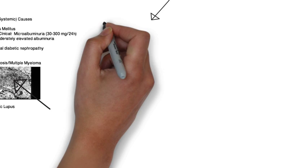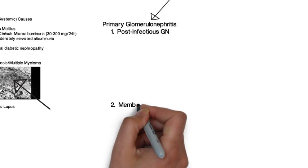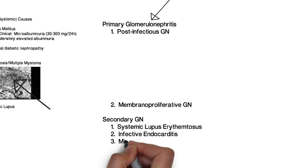that we talk about is post-infectious glomerulonephritis, otherwise seen as post-strep glomerulonephritis, where there's a latent period of 7 to 10 days after the infection with low serum complement.